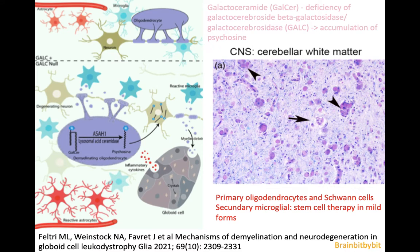There is a lot of myelin debris and inflammatory cytokines, so it's also harmful for microglial cells and macrophages. Microglial cells and macrophages with a lot of galser stored in them are called globoid cells, which explains the alternative name for Krabbe's disease.